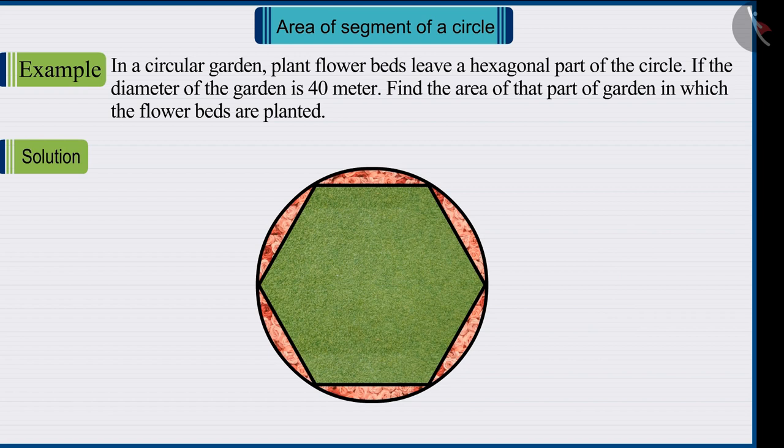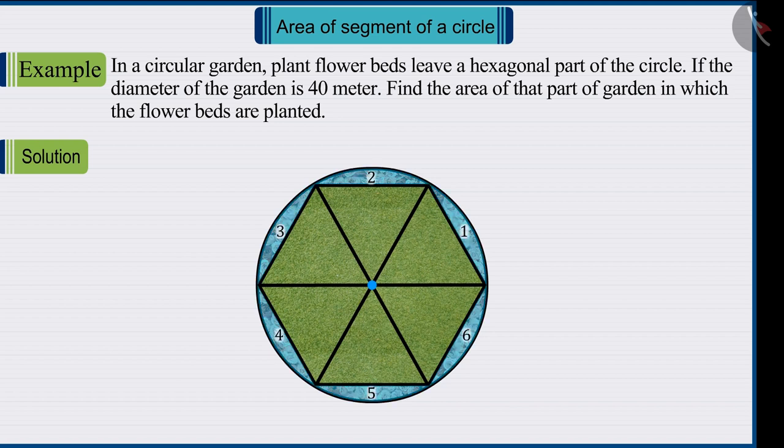Come, let's try to solve this. As you can see from the figure, there are 6 flower beds in the garden. According to this figure, there are 6 segments in the circle.